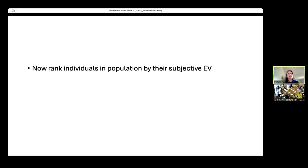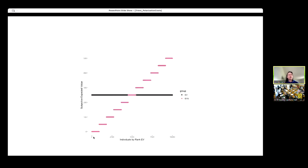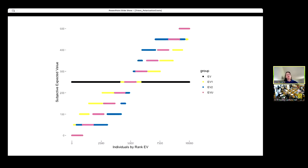Now I'm going to show these in a different way. What I'm simply going to do is rank the individuals in the population by their subjective expected value for this prospect from low to high. The black line is the true expected value. The normal distribution looks like this, and this is what we get for the bimodal distribution.